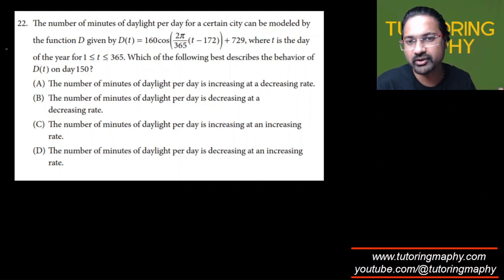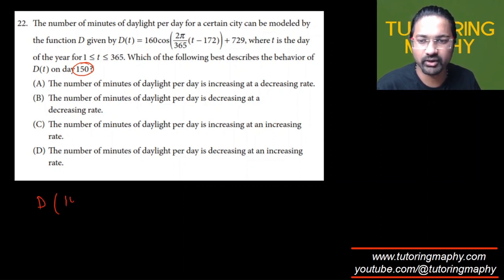First, we need to find whether the number of minutes of daylight at day 150 is increasing or decreasing. That's our first aim. So let's find the value of D(149), D(150), and D(151).